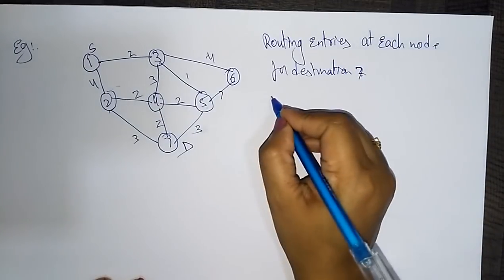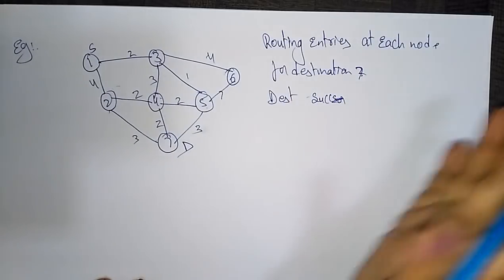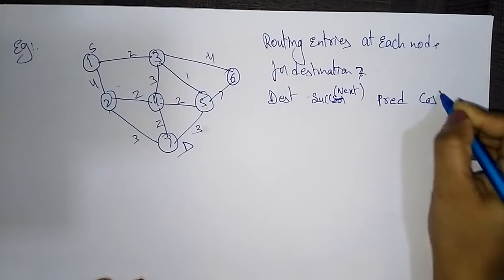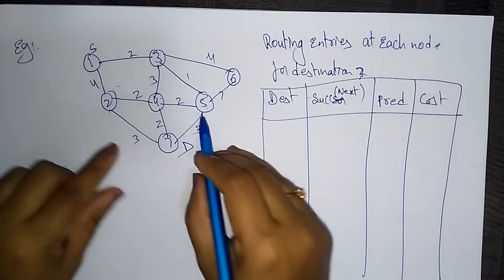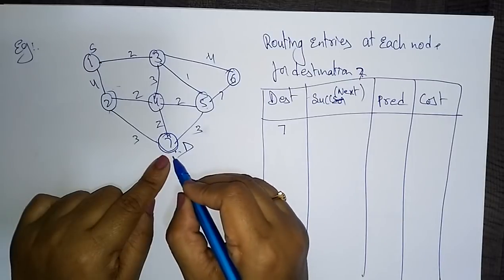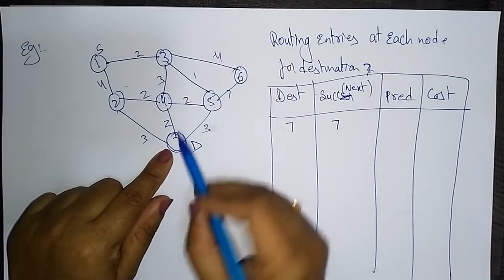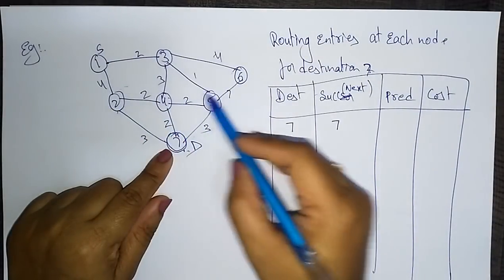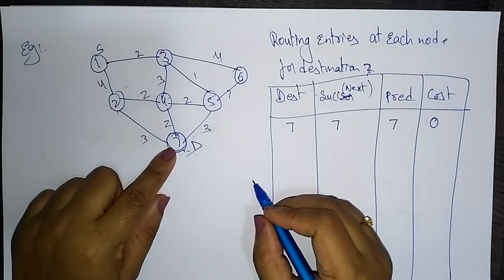The table has columns: destination, successor (next node), predecessor (before node), and cost. Starting with node 7 — the destination itself — there is no successor, the predecessor is 7 itself, and the cost is zero. Now let's take node 6.